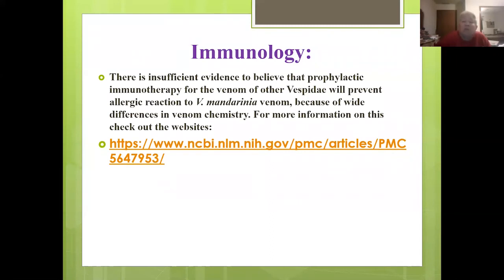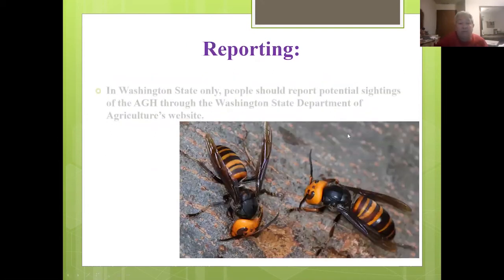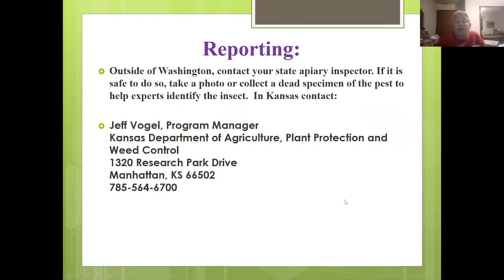The therapies we use for other wasp stings — prophylactic immunotherapy — may or may not work for Vespa mandarinia venom. In Washington State, report sightings to the Washington State Department of Agriculture website. Outside of Washington, contact your state apiary inspector. If it's safe to do so, collect a specimen; if not, just report it. In Kansas, there is a state reporting site. This presentation will be available on the K-State website.